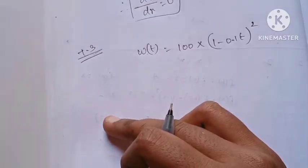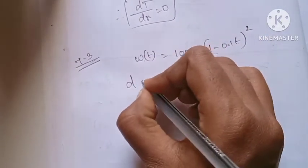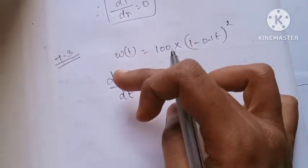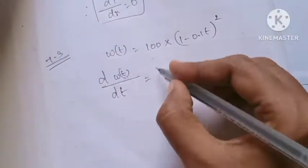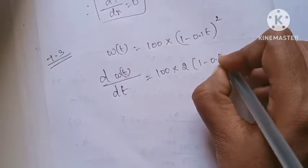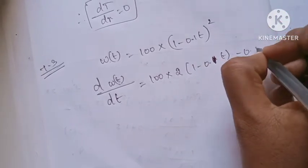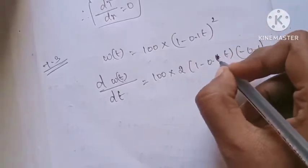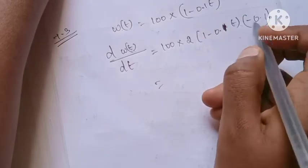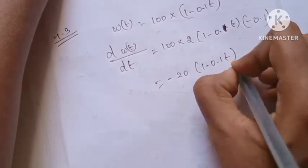The rate of change is found by differentiation. So we find dW/dt. Differentiating: 100 into 2 into (1 - 0.1t) into (-0.1). Multiplying 2 into 100 gives 200, and 200 into 0.1 equals 20. So dW/dt = -20 into (1 - 0.1t).